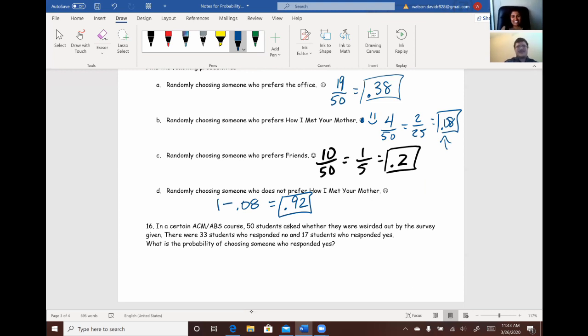All right. In a certain ACM ABS course, 50 students were asked whether they were weirded out by the survey. There were 33 students who responded no and 17 students who responded yes. What is the probability of choosing someone who responded yes? All right. So, for the record, I am surprised that that number of yeses was not a lot higher. We asked some weird things in this survey. Which you'll see in the next videos.